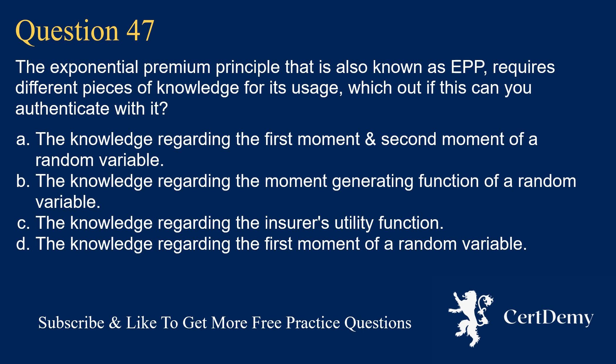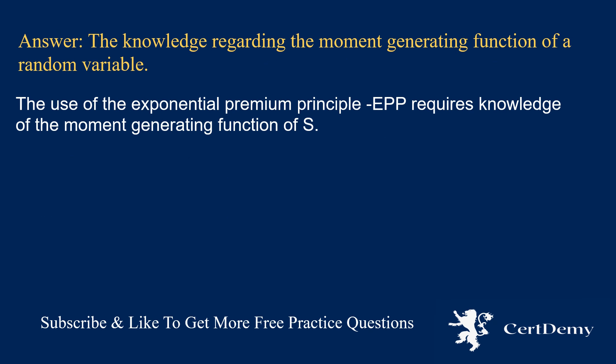Question 47. The exponential premium principle (EPP) requires different pieces of knowledge for its usage. Which can you authenticate? Options: knowledge of first and second moments of a random variable; knowledge of the moment generating function of a random variable; knowledge of the insurer's utility function; knowledge of the first moment of a random variable. The answer is: knowledge of the moment generating function of a random variable. The use of the EPP requires knowledge of the moment generating function of S.